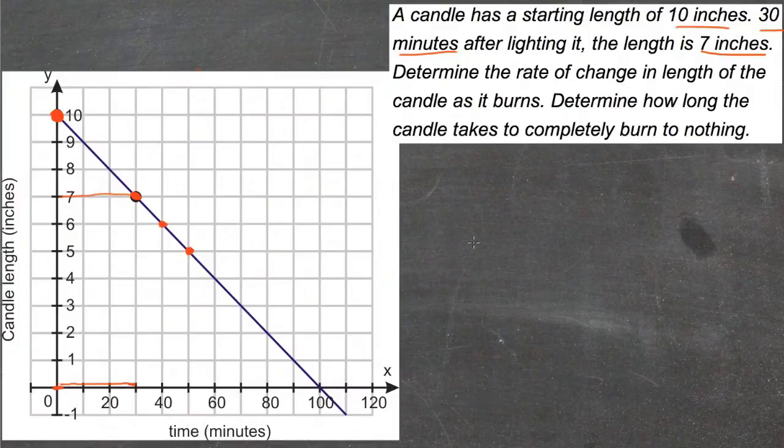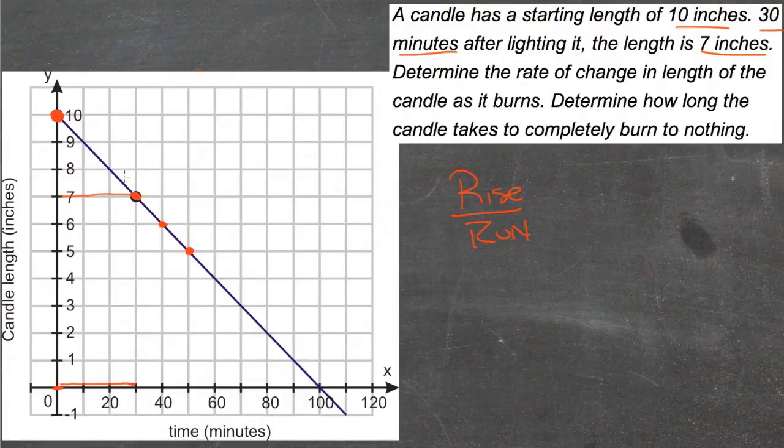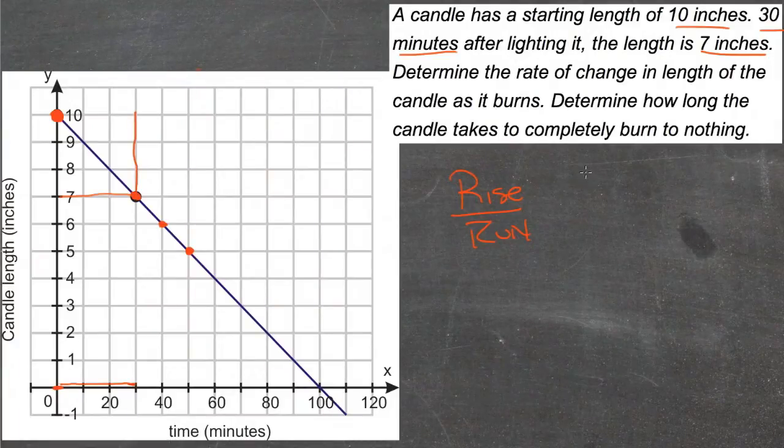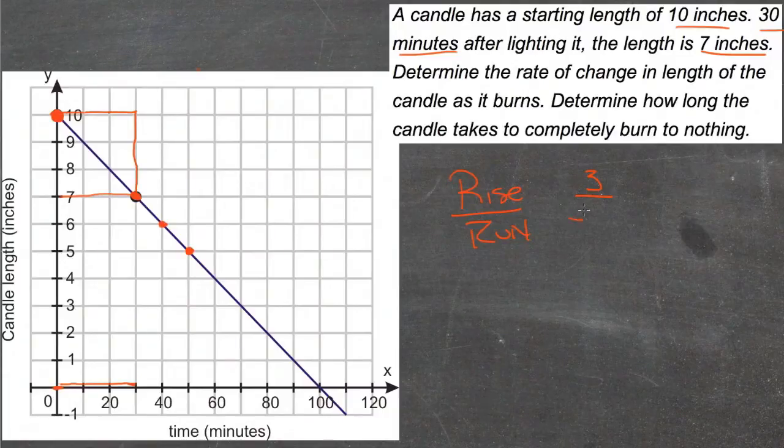So the slope of our line then is rise over run, and we can pick any two points here on the graph. Let's say this one and this one. We rise 1, 2, 3, so our rise is 3, and our run is from 30 back to 0, so our run is negative 10, negative 20, negative 30. So we have a run of negative 30.